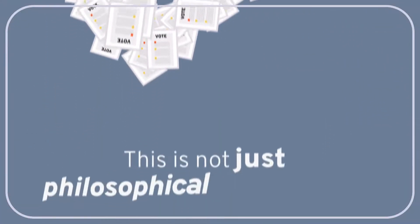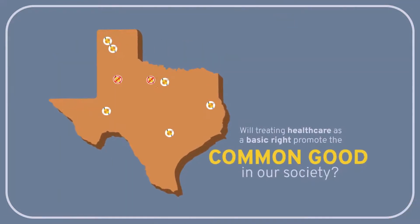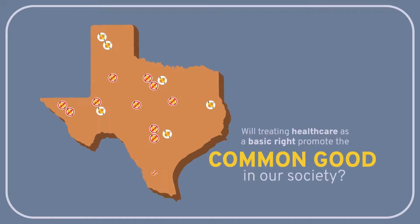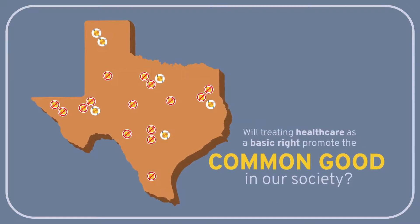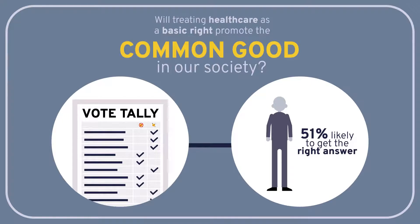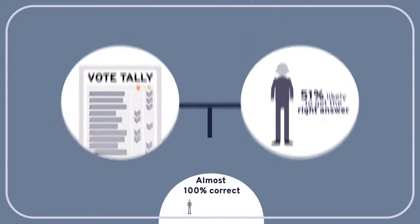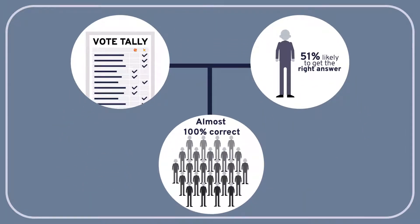That's not just philosophical speculation, it's a mathematical fact. So in a large enough electorate, if we assume that voters are deciding whether a certain policy is in our common interest, and that each of them is just slightly more likely to get the answer right than to get it wrong, the outcome of an election will almost certainly be correct about whether the policy would advance the common good.